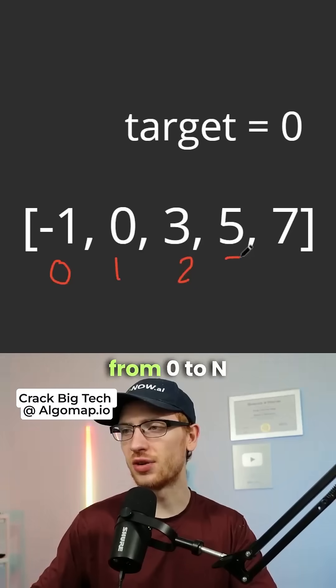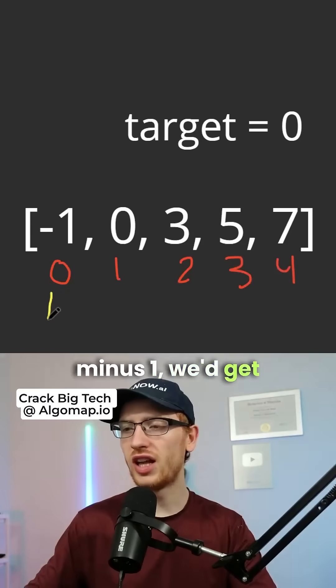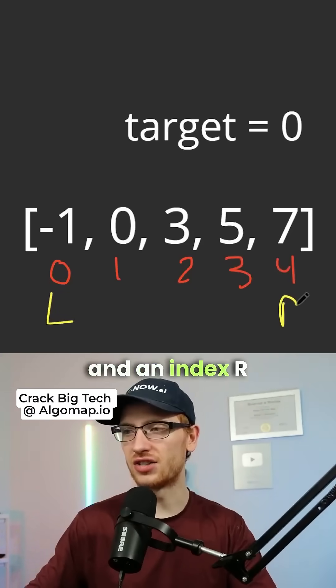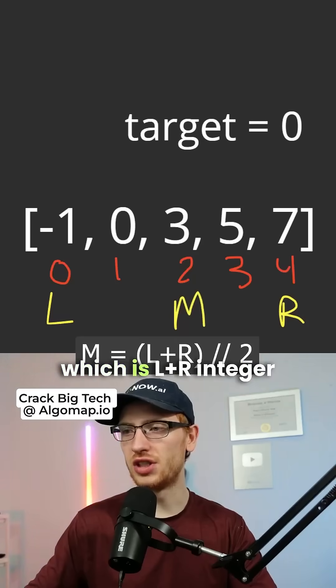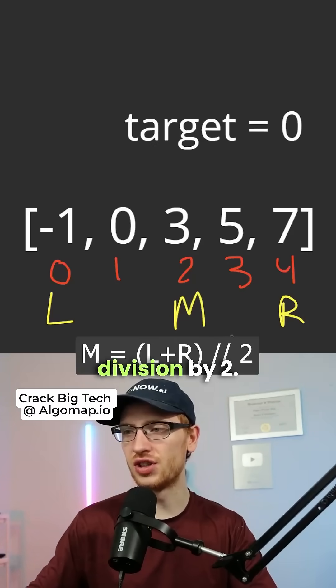If we have each of our indices from 0 to n-1, we'd get an index l at the beginning and an index r at the end. Then we'd iteratively calculate the middle, which is l plus r integer division by 2.